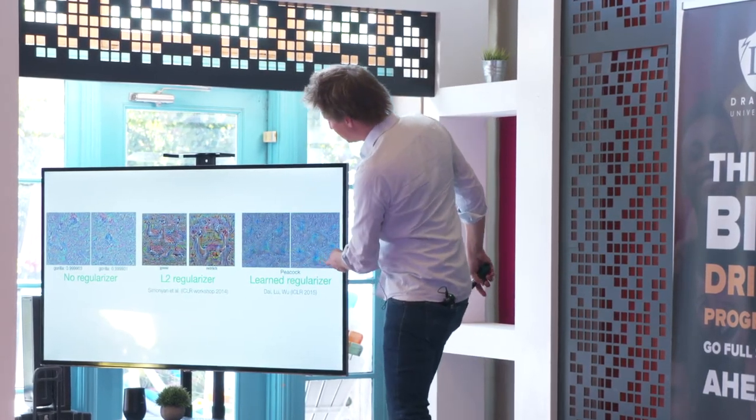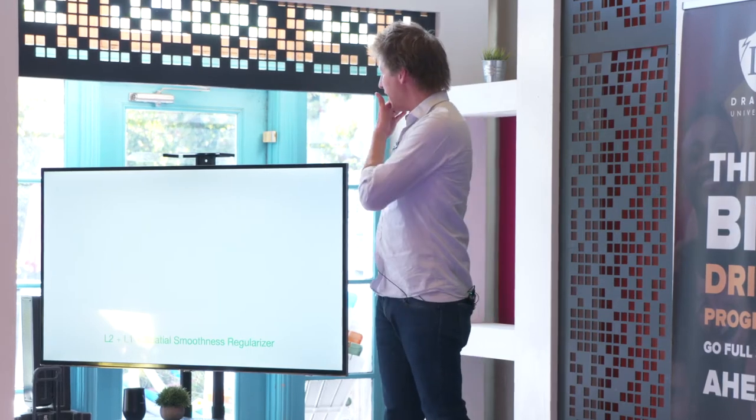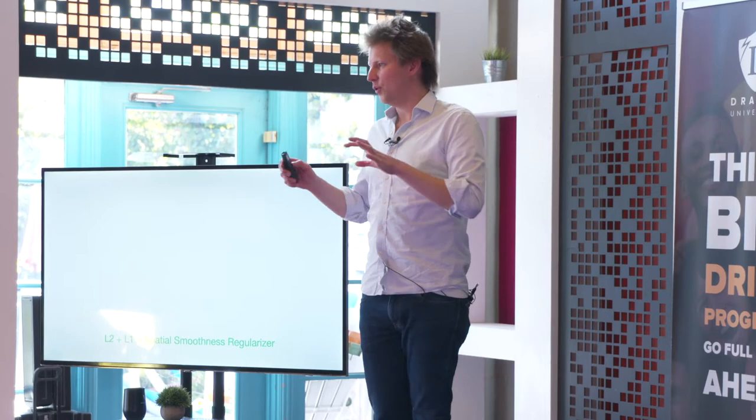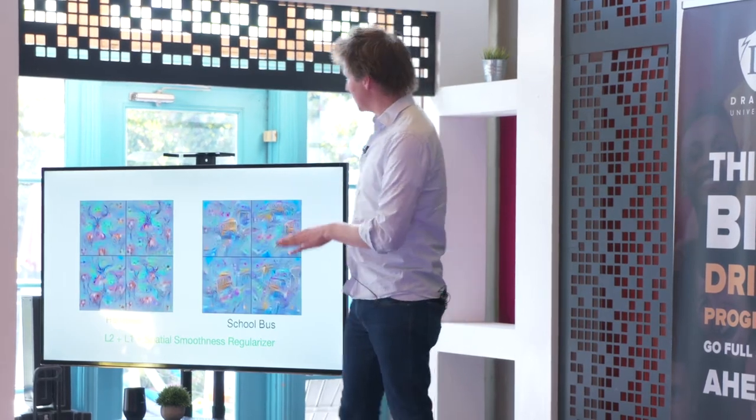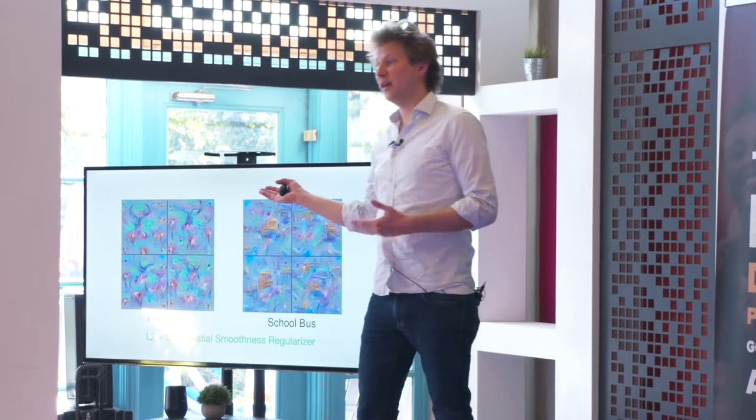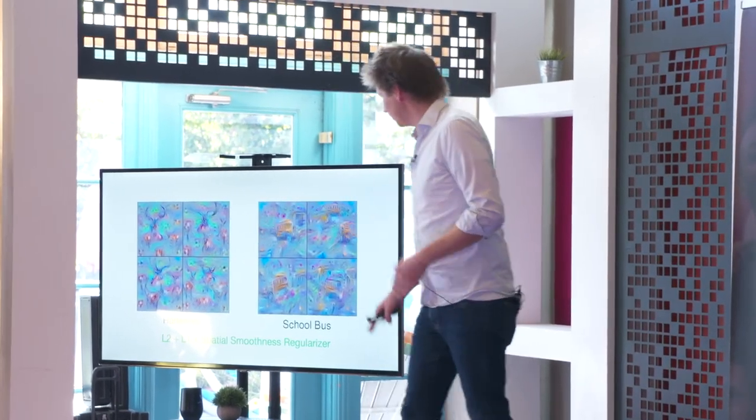After playing around with it for quite a while, we found a different combination of regularizers, ways of running this for loop in Python, that resulted in much more clear visualizations. So here we can now draw—this is what the network thinks of as a hartebeest or a school bus.